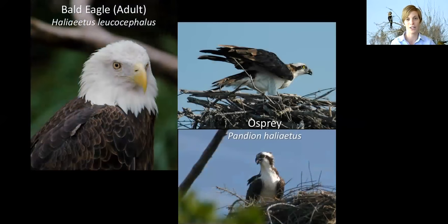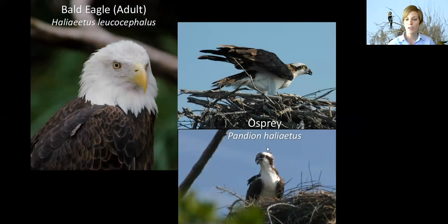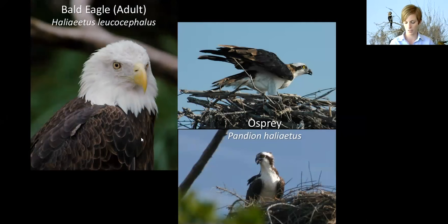If you're able to see the head of either species, the osprey has a brown eye stripe, which the bald eagle lacks — their head is just solid white when mature. And if you look at the chest of the two species, the osprey has a white chest compared to the solid brown of the bald eagle. So just a couple of things you can look for there.